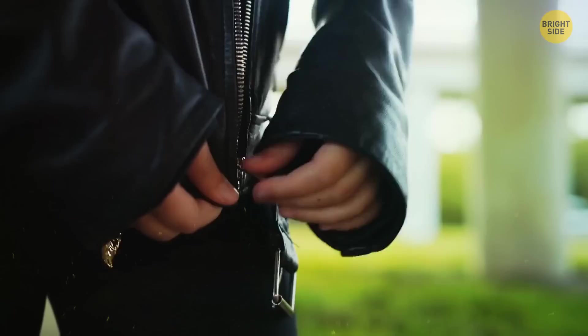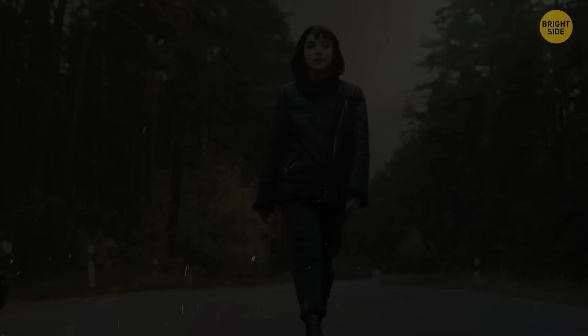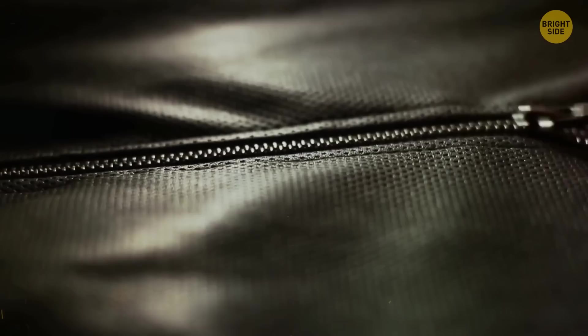The zipper on leather biker jackets is often sewn diagonally. It's not just a fashion statement. Zips that are stitched vertically can bunch up if the wearer leans forward, but a diagonal zipper won't.